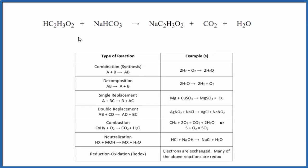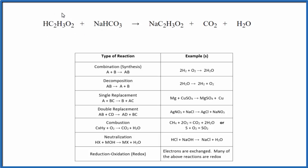In this video, we'll take a look at the type of reaction for HC2H3O2 plus NaHCO3. This is acetic acid, also called ethanoic acid, and this is sodium hydrogen carbonate, also called sodium bicarbonate.